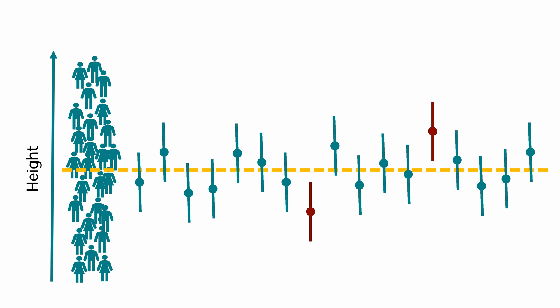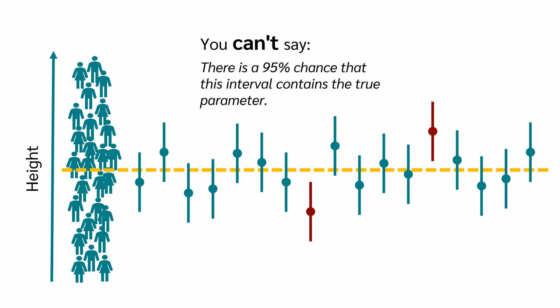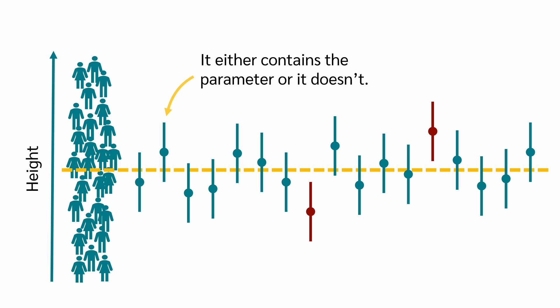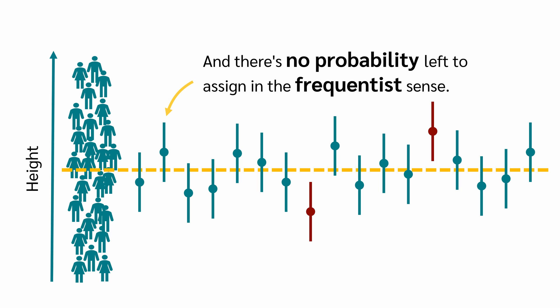So, for example, in all these samples, the true value falls within the confidence interval, while in those samples, it doesn't. In summary, you cannot say that there is a 95% chance that this interval contains the true parameter, because once the interval is calculated, it either contains the parameter or it doesn't, and there is no probability left to assign in the frequentist sense.